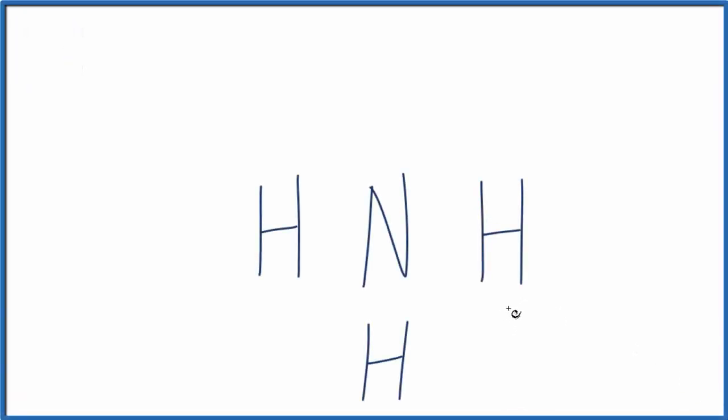In this video we'll draw the dot and cross structure for NH3, that's ammonia. Here's our NH3. We're pretty much drawing a Lewis structure but we're trying to show where the electrons that are shared which atom they came from. So let's count the valence electrons up, draw the Lewis structure, and then we'll convert that to a dot and cross structure.